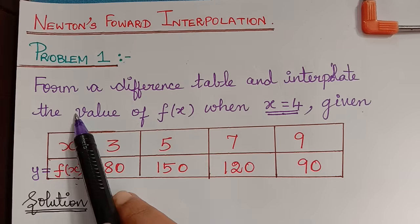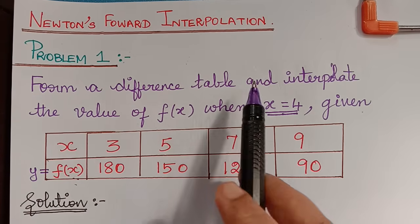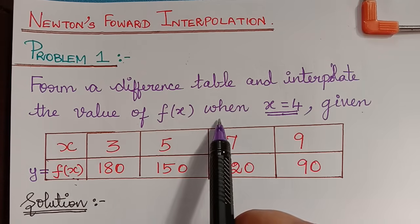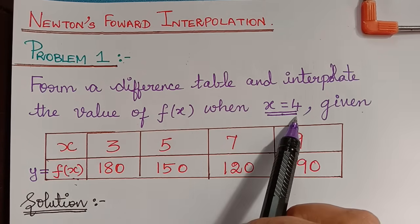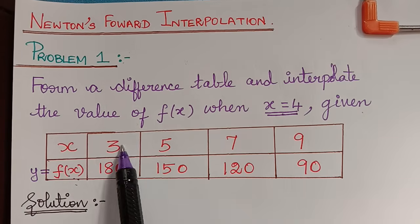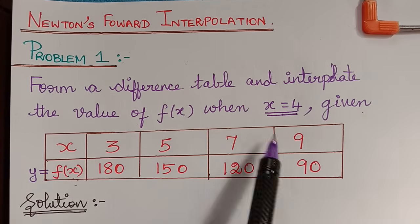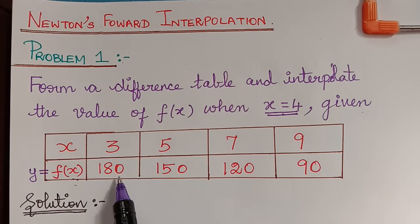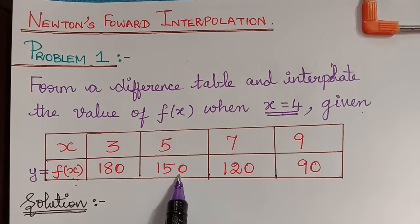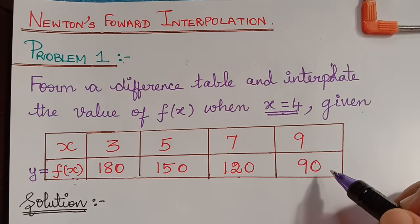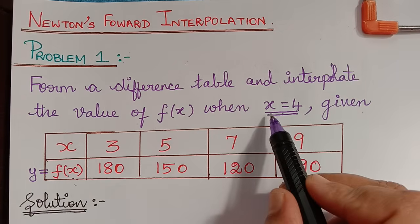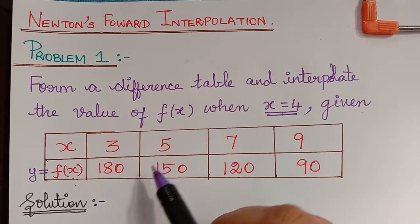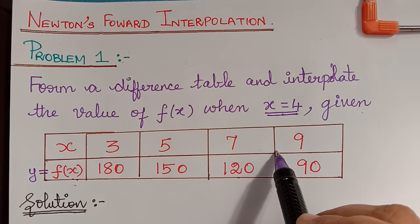The question is: form a difference table and interpolate the value of f(x) when x is equal to 4. Given the values of x are 3, 5, 7, and 9, and the corresponding values of y which is f(x) are 180, 150, 120, and 90. We have to find the value of y when x is equal to 4.